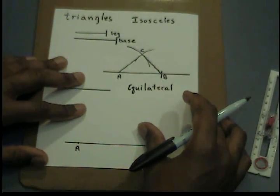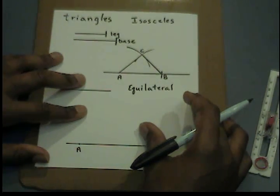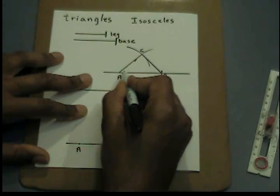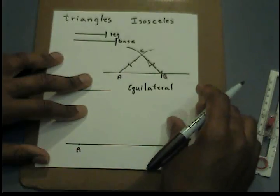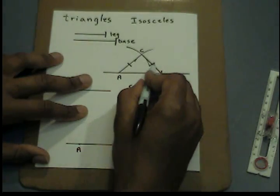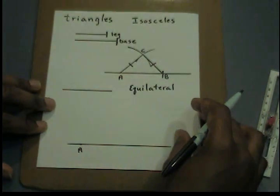Because we have an isosceles triangle, we need to indicate that we do. We have our base segment, and we have our legs, which are congruent. So I place congruency symbols to show that the legs are congruent.